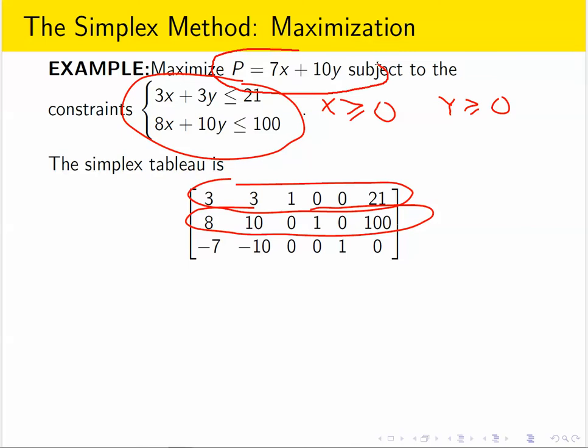And then we have the objective function, which also gets converted into an equation that becomes the final row in the simplex tableau. So once we have converted the problem into a matrix like this, our next step is going to be to perform some operations on the rows.